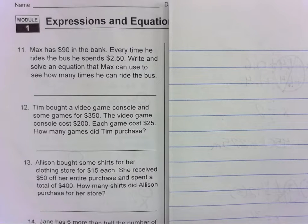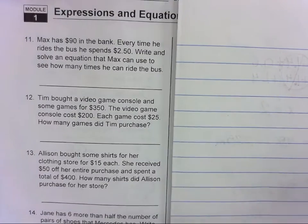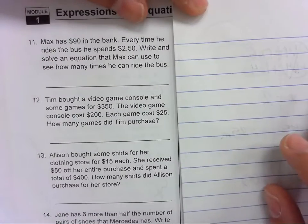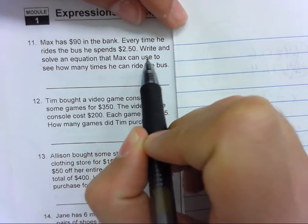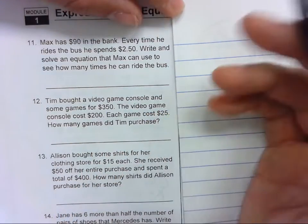Module one study guide, problem 11. Max has $90 in the bank. Every time he rides the bus he spends $2.50. Write and solve an equation that he can use to see how many times he can ride the bus.